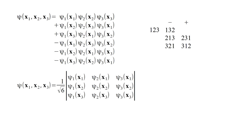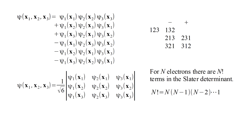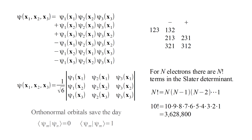This is starting to look unwieldy. For n electrons, there are n factorial terms in the Slater determinant, because there are n factorial permutations of the numbers one through n. n factorial is n times (n−1) times (n−2) down to one. The water molecule has only ten electrons, yet ten factorial is more than three million. Fortunately, we can always take our single-electron orbitals to be an orthonormal set, in which the projection of any orbital onto another is zero and the projection of an orbital onto itself is one. In this case, the vast majority of terms in calculations with Slater determinants are zero, and we end up with tractable expressions.